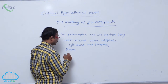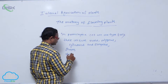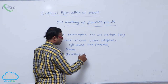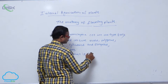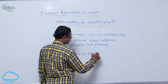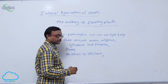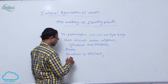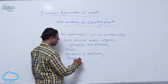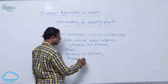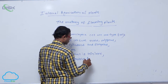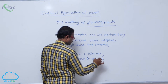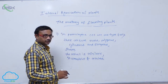The cell wall is a thin layer. It is made up of cellulose.